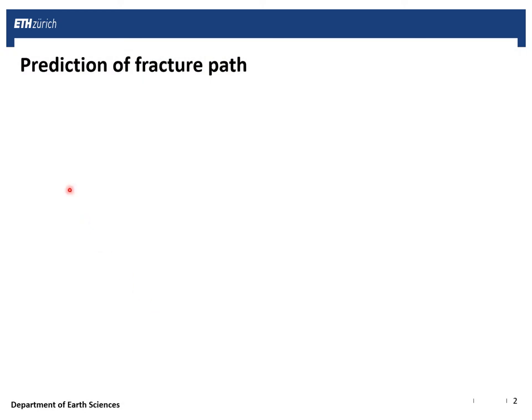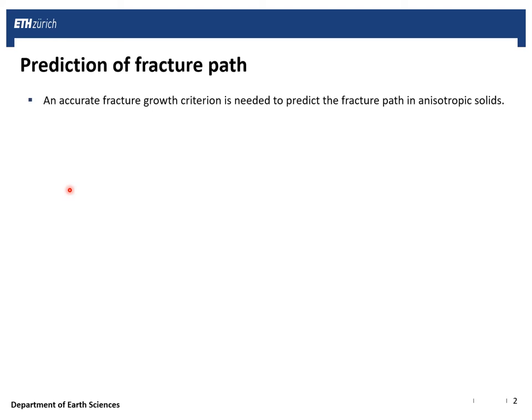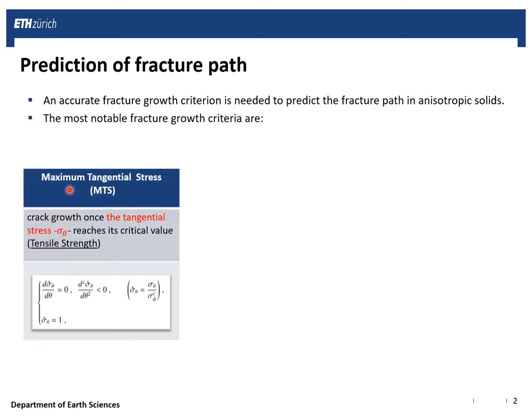At the first stage, I introduce the most accurate and notable fracture growth criteria which have been used in the literature and are also applicable in isotropic solids. The first one is the MTS or maximum tangential stress. According to this model, the crack grows along the direction at which the tangential stress or sigma-theta reaches its critical value, which is often associated with the tensile strength of the material.